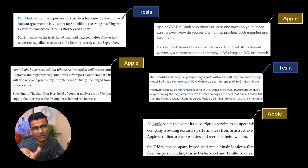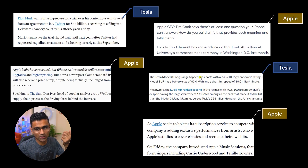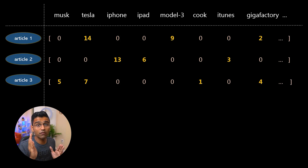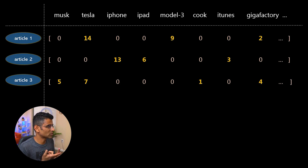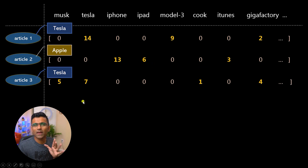If you encounter Apple or iPhone, you know the article is about Apple. This is a classic problem in NLP where they try to auto-extract entities or tag topics to a news article. This approach is called bag of words, which we already discussed. You have three articles, you don't know which company they're from, and in the first article Tesla appears 14 times, Model 3 appears nine times — obviously it's Tesla. In the second article, iPhone appeared 13 times, iPad six times, so you know it's about Apple.